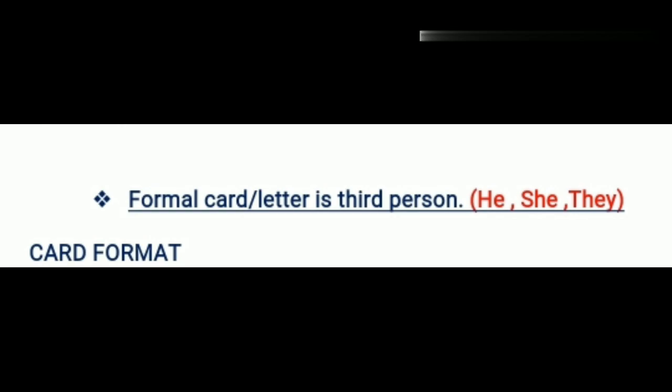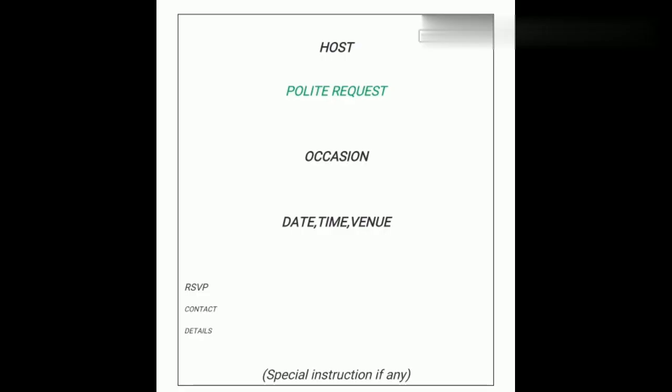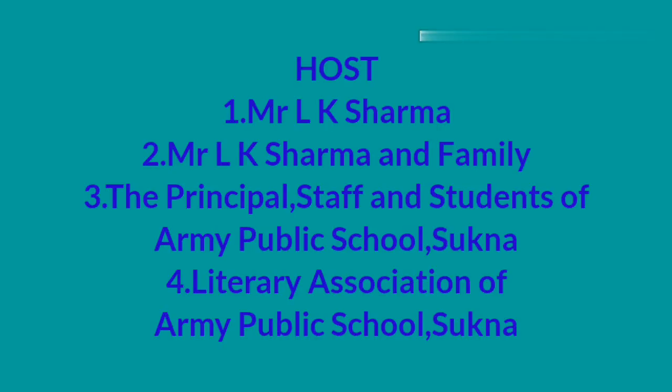Now let's see the card format of the invitation. First, you have to mention the name of the host, then a polite request, after that the occasion, date, time, and venue. At the left-hand side at the bottom we write RSVP — I'll tell you what that represents. At the bottom center we write any specific instructions. One very important thing: whenever you write card format, it should be within a box.